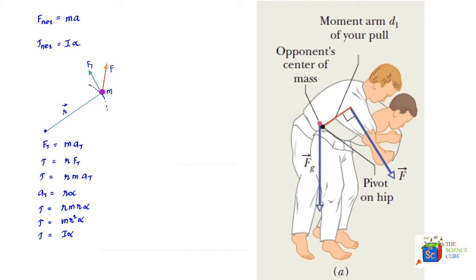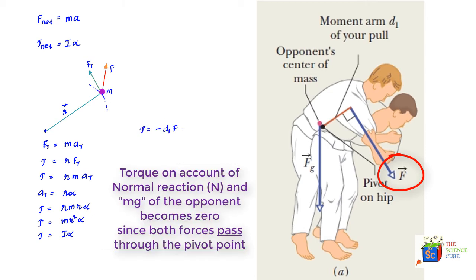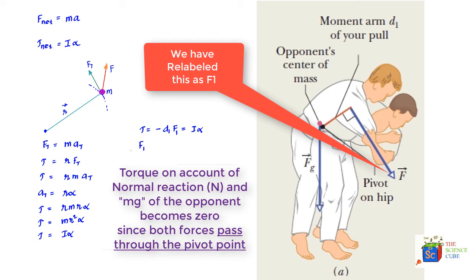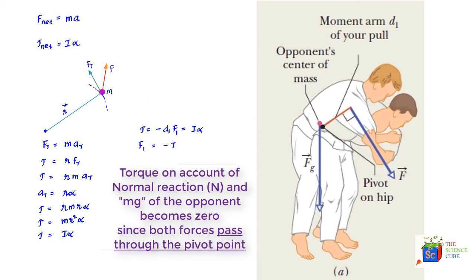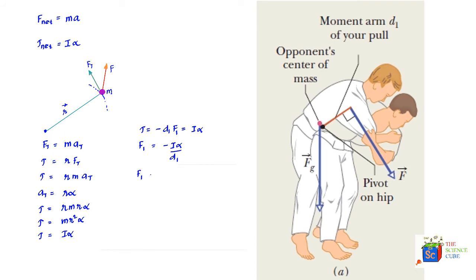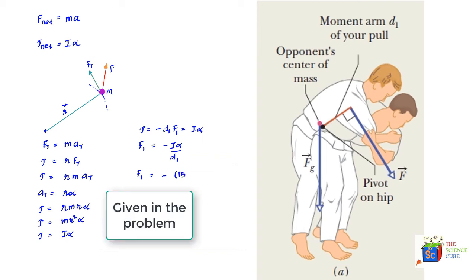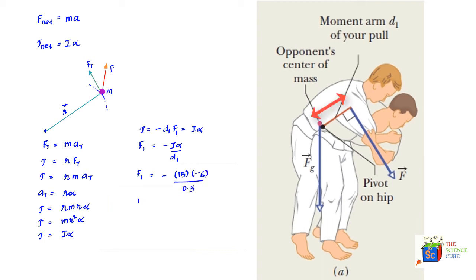The torque due to your pull is −d1 × f1, since you're causing clockwise motion, and this equals I α. So f1 = −I α / d1. Substituting the values: f1 = −15 × (−6) / 0.3, which gives f1 = 300 N. So you need to pull your opponent with a force of 300 N for him to fall to the ground.